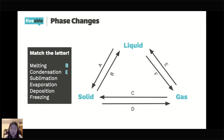Sublimation is D — going from a solid to a gas. This one is easy to mix up with deposition. It's not the most critical thing for the AP exam, but it's helpful to know when describing how phase changes work.